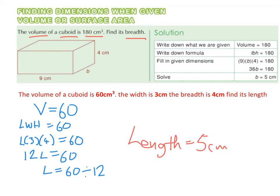And we can check our answer because we know that the length multiplied by the width multiplied by the breadth will give us the volume. Or you could say the length multiplied by the width multiplied by the height will give us the volume. So 5 by 3 by 4 should be 60.